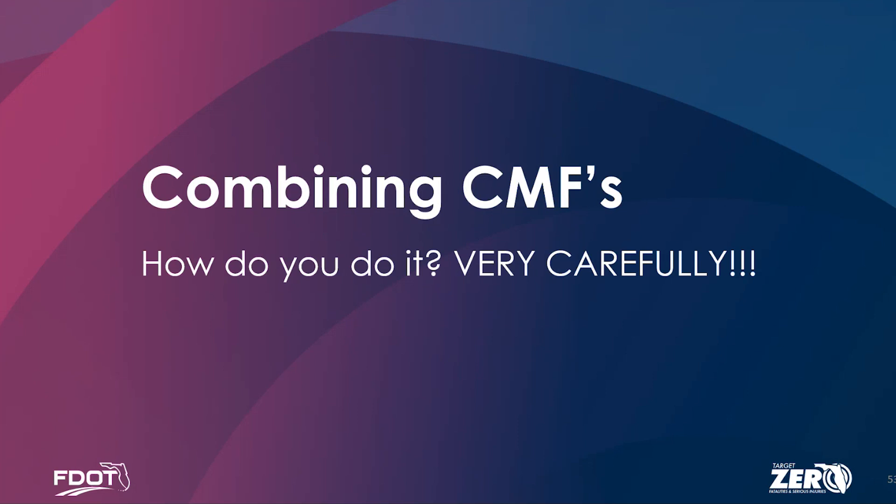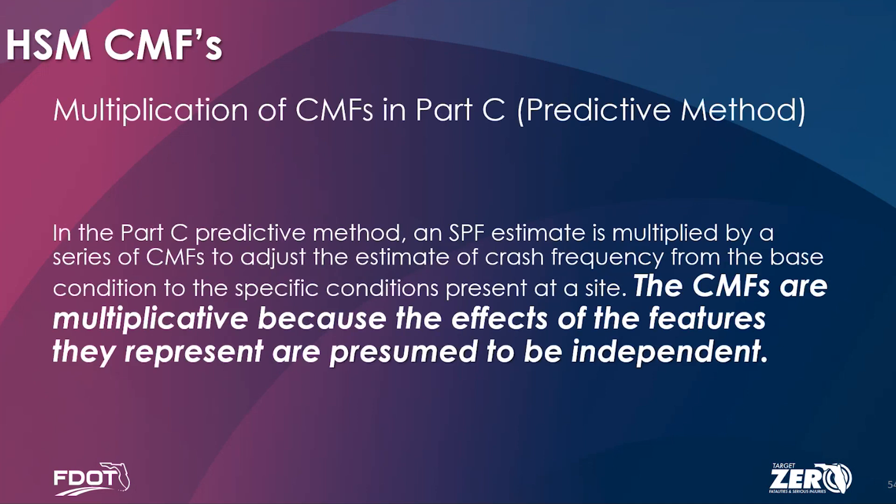When we're looking at a project, we put multiple countermeasures in — say we're trying to prevent run-off-the-road crashes in a curve and we're doing rumble strips, chevrons, flashing beacons, and lighting. Can we take all of those CMFs and add them up together to get our reduction? No. We need to be very careful when combining CMFs. It doesn't mean you can't look at them individually to get an idea of how effective they are. But when you combine them to do a benefit-cost analysis or get an expectation of total reduction, it doesn't work like that.